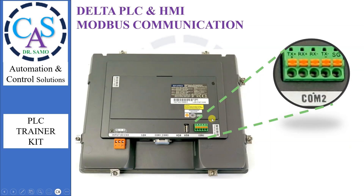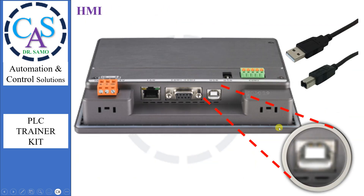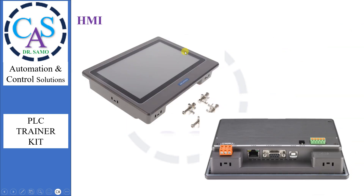HMI Communication Port: COM Port 2 will be used for communication. Two wires are needed for communication. These wires will be connected to TX Plus and TX Minus. These two wires use the Modbus Protocol over RS-485 communication. HMI will be connected to the computer through a USB-B cable, also known as the HMI programming cable. It is used to download the HMI program from software to HMI. HMI can be installed in a panel box using clips.